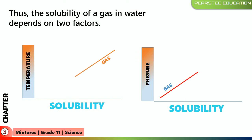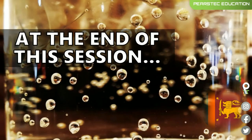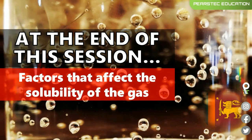So the solubility of a gas in water depends on two factors: temperature and pressure. More temperature means the solubility is definitely decreasing. More pressure means the solubility of the gas is increasing. At the end of this session we came to know the factors that affect solubility of a gas — temperature and pressure. When we were talking about solids in liquids, temperature, type of solvent, and type of solute were the factors. Now we know everything about solubility in liquid, solid, and gas.